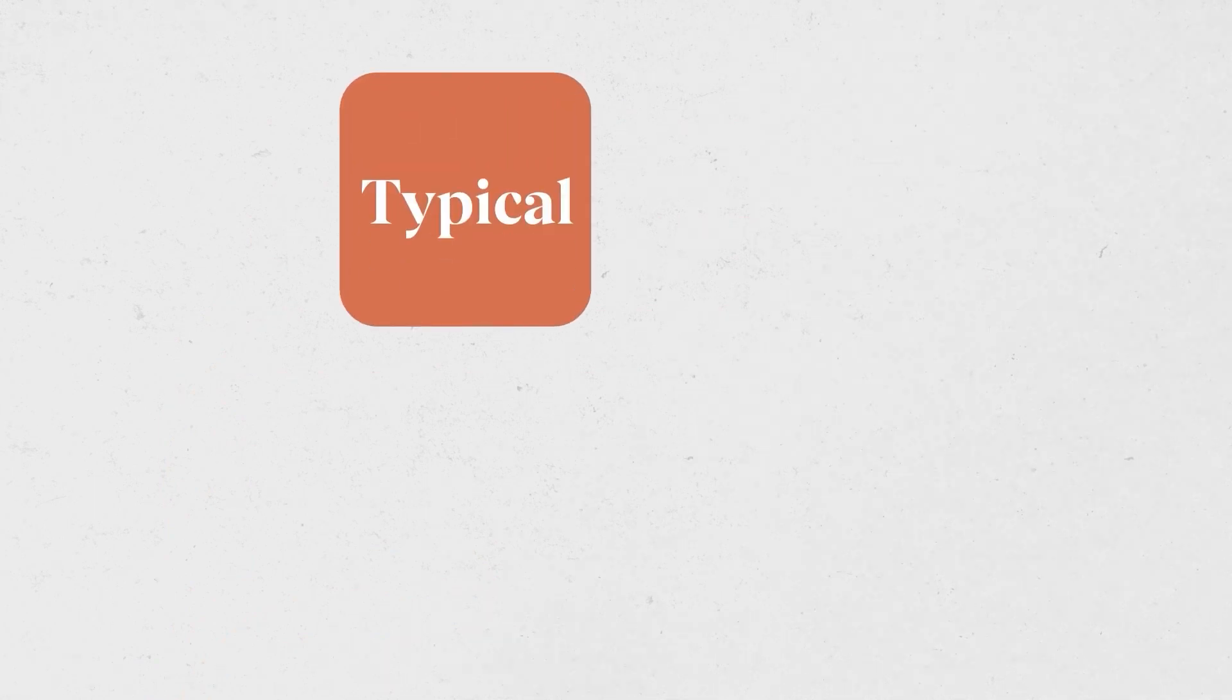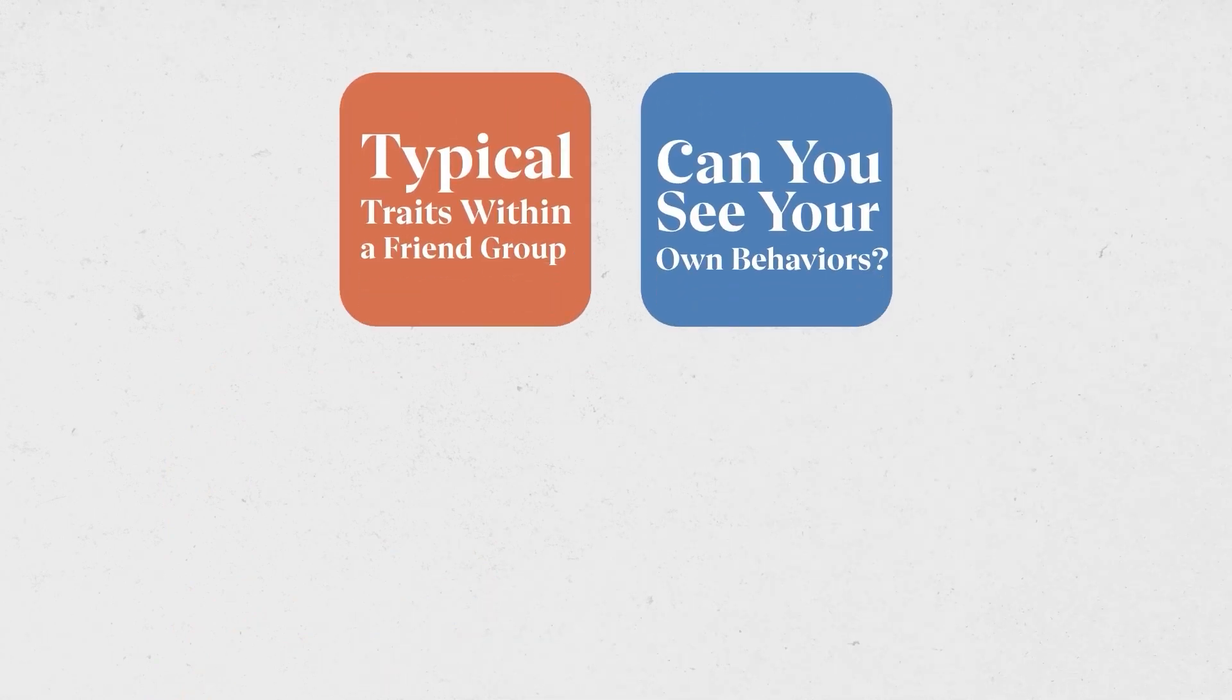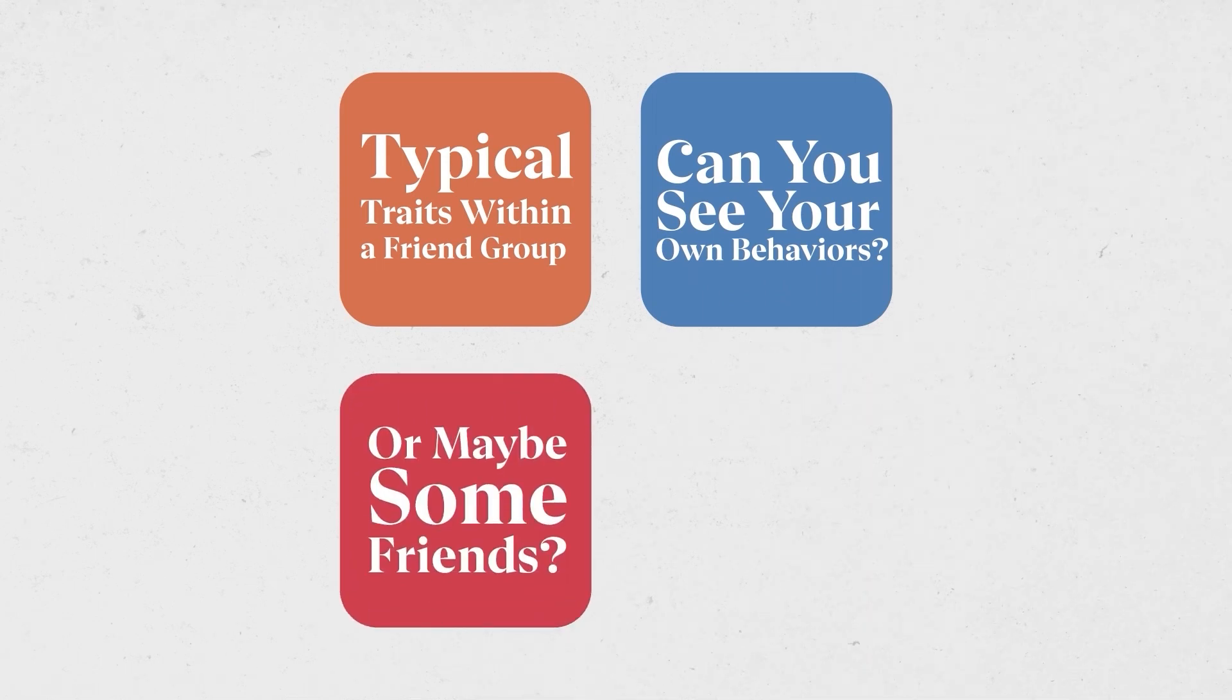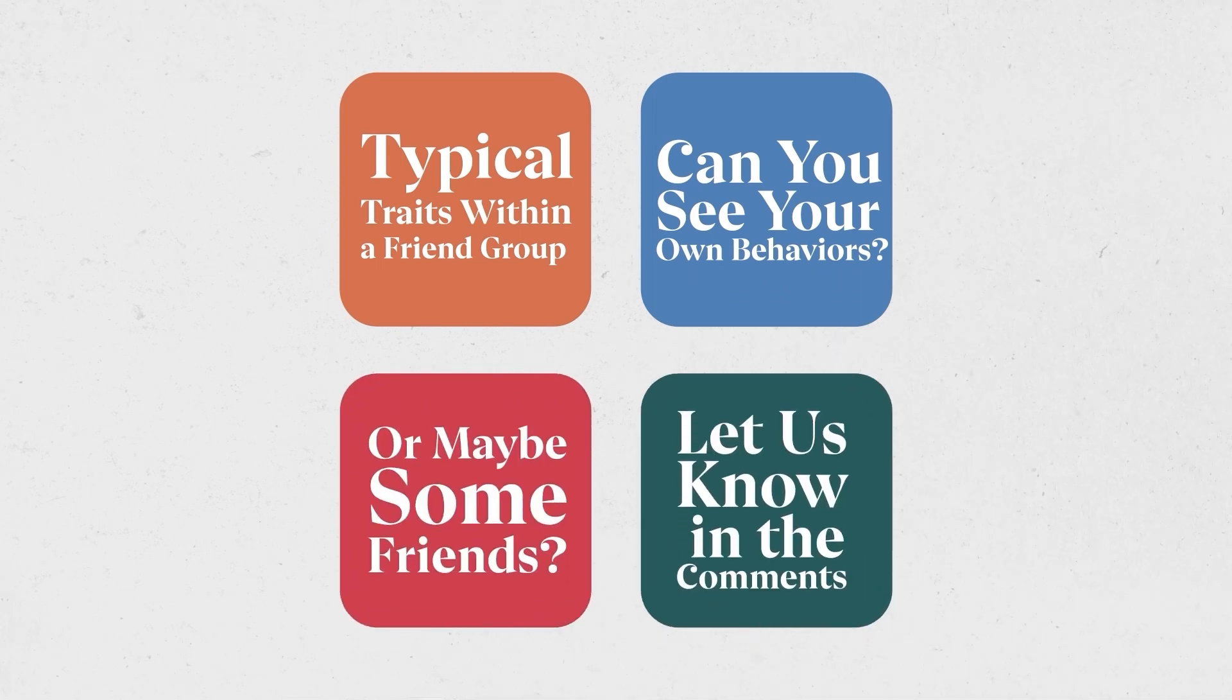What do you think about the typical traits of a disorganized attacher within a friend group? Can you see your own behaviors in the descriptions, or maybe even some of your friends? Let us know your thoughts in the comments section below.